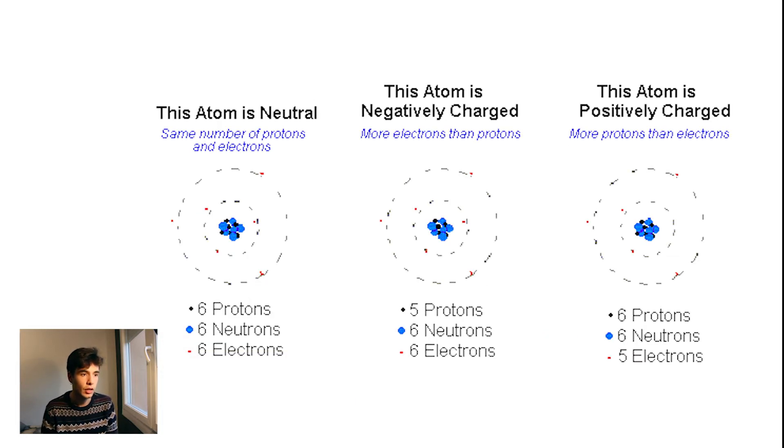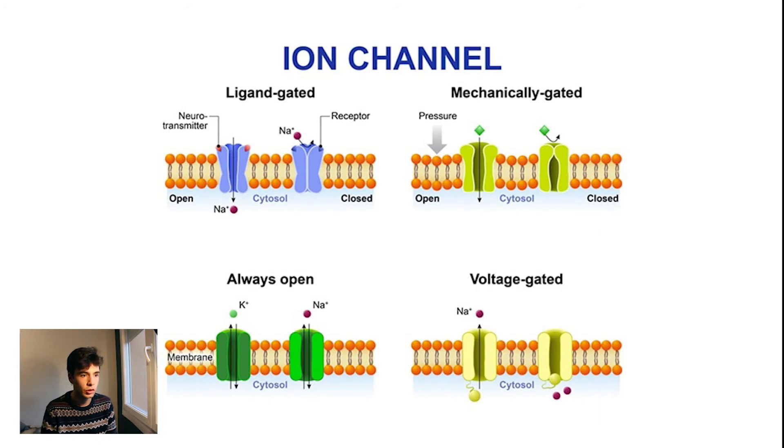Remember that ions are atoms or molecules that do not have a neutral charge because they have more protons than electrons, or the other way around. There are two types of ion channels: passive and active. A passive ion channel allows the flux of ions with no restriction, whereas an active ion channel only allows the flux of ions under a certain condition.